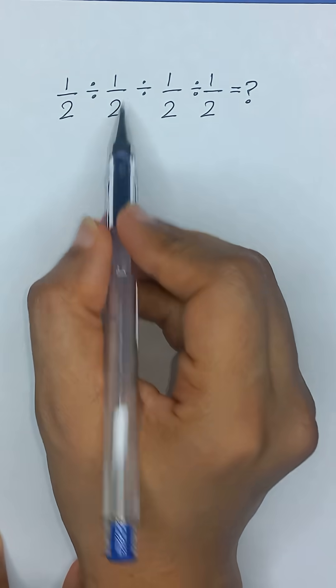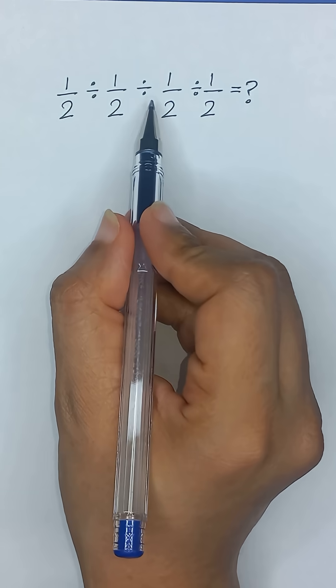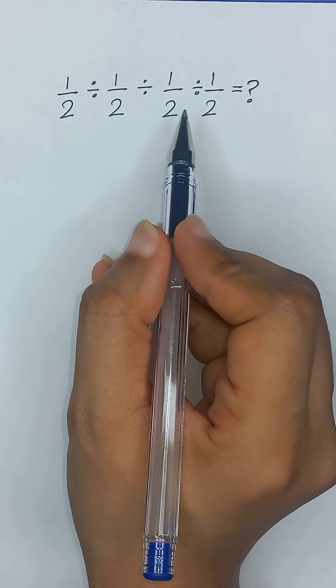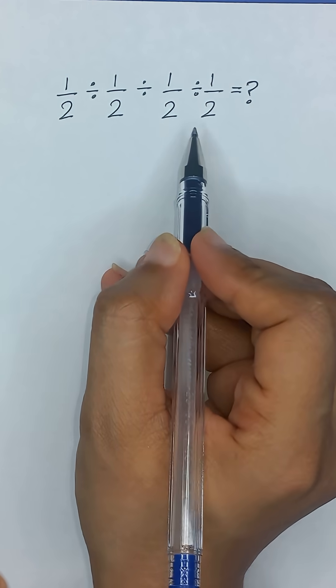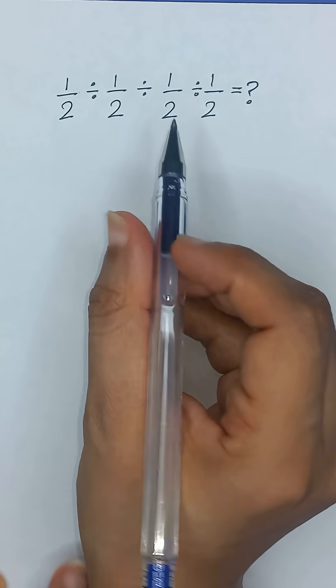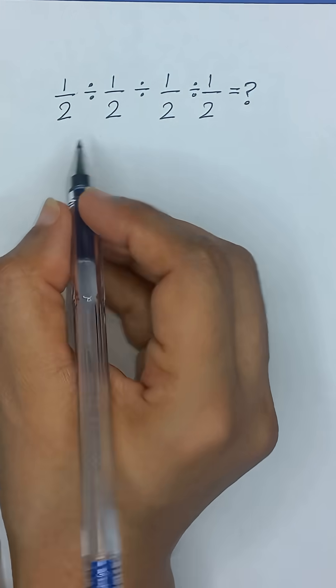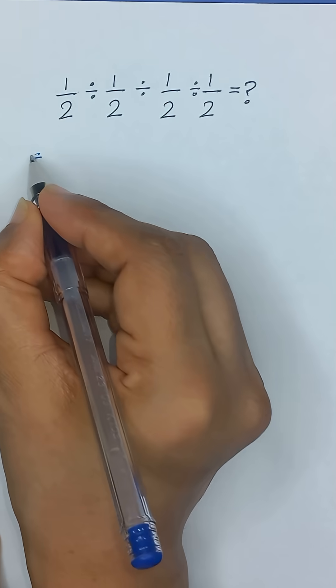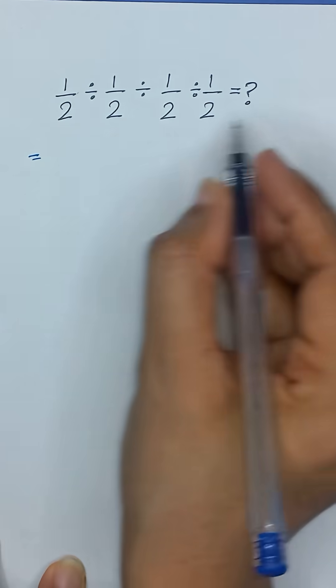1 divided by 2 divided by 1 divided by 2 divided by 1 divided by 2 divided by 1 divided by 2. What will be the value of this given expression? So let's start to solve it from left to right.